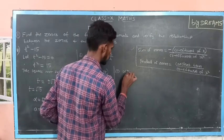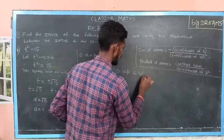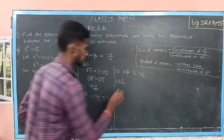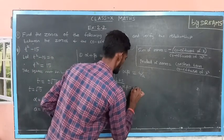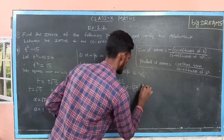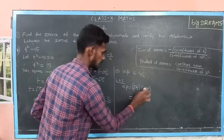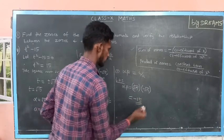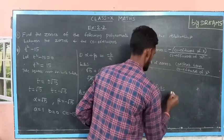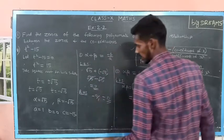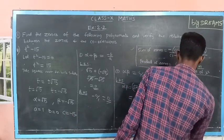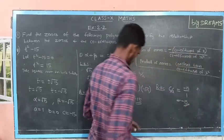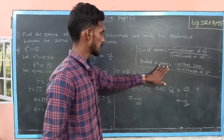Then the second condition: product of zeros, alpha into beta, is equal to c by a. Consider the LHS: alpha into beta, that is root 15 into minus root 15, which is minus 15. Consider the RHS: c by a. The value of c is minus 15 and the value of a is 1. So, minus 15 by 1 gives minus 15. Thus, LHS and RHS are equal. The second condition is also verified.